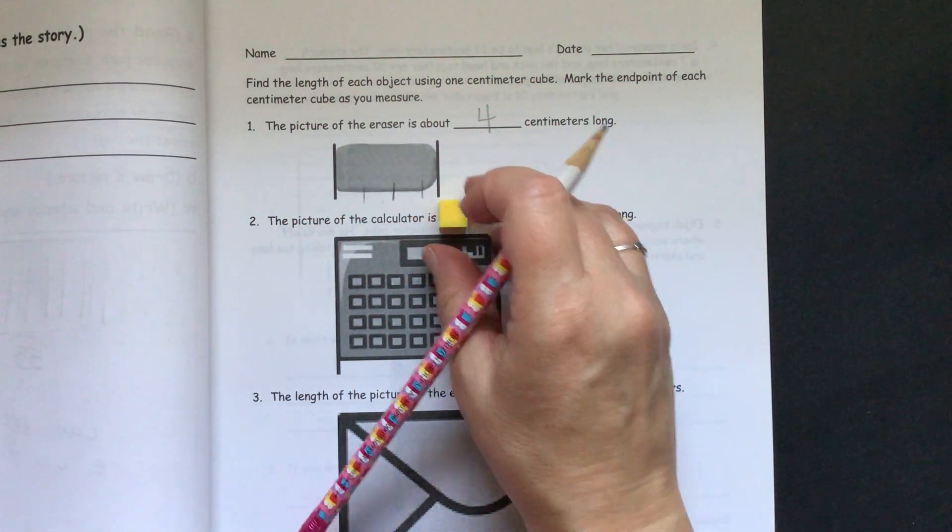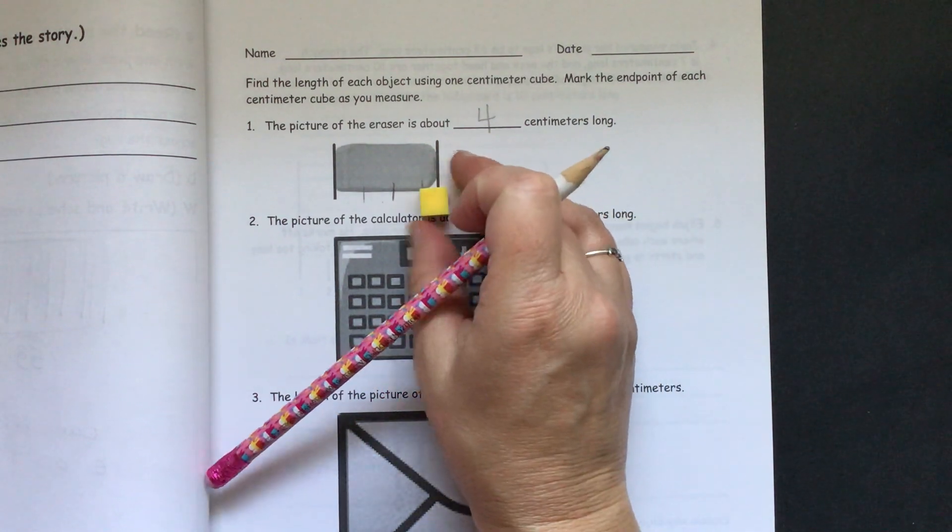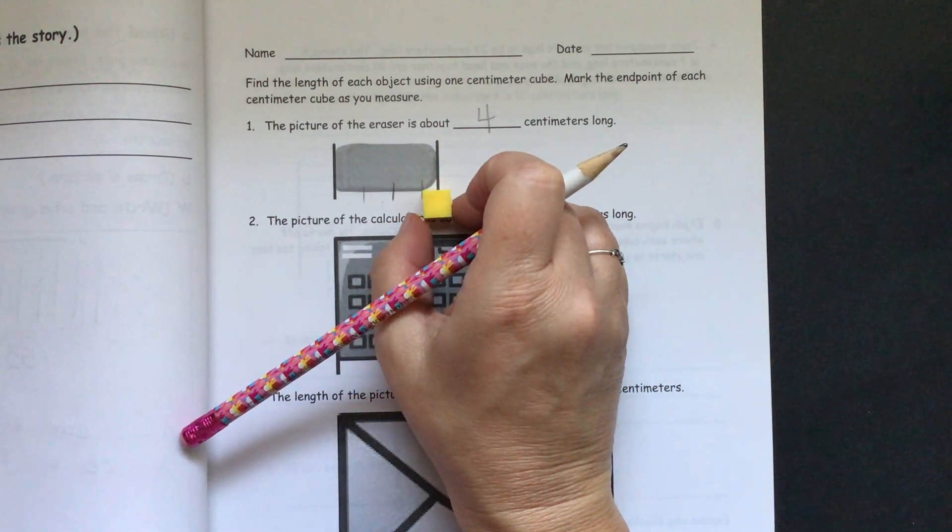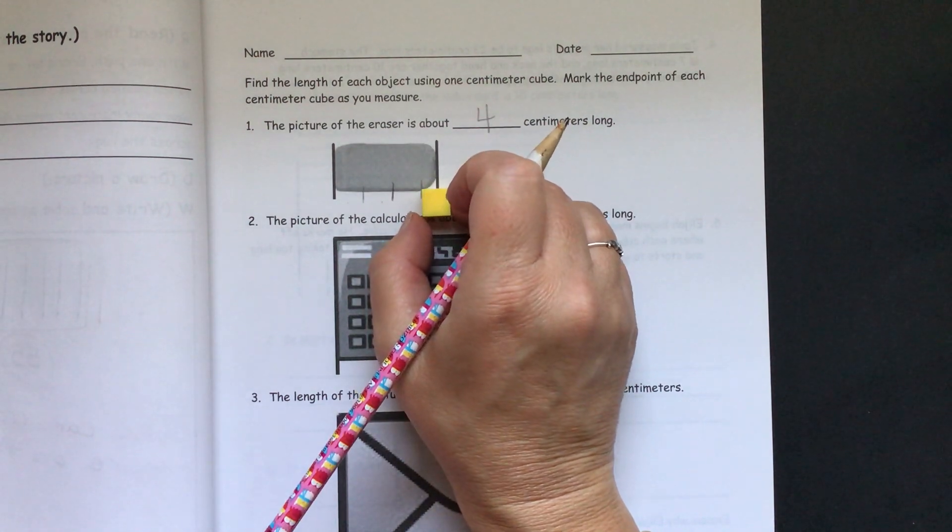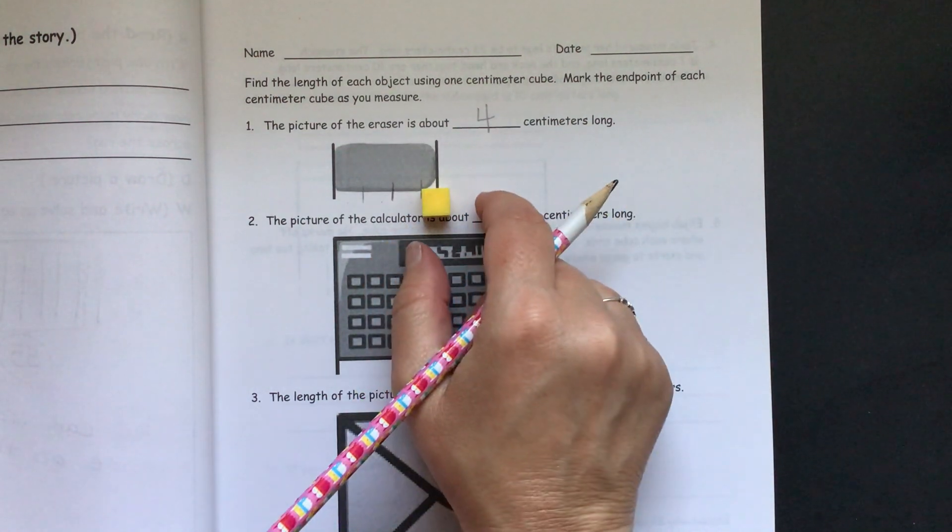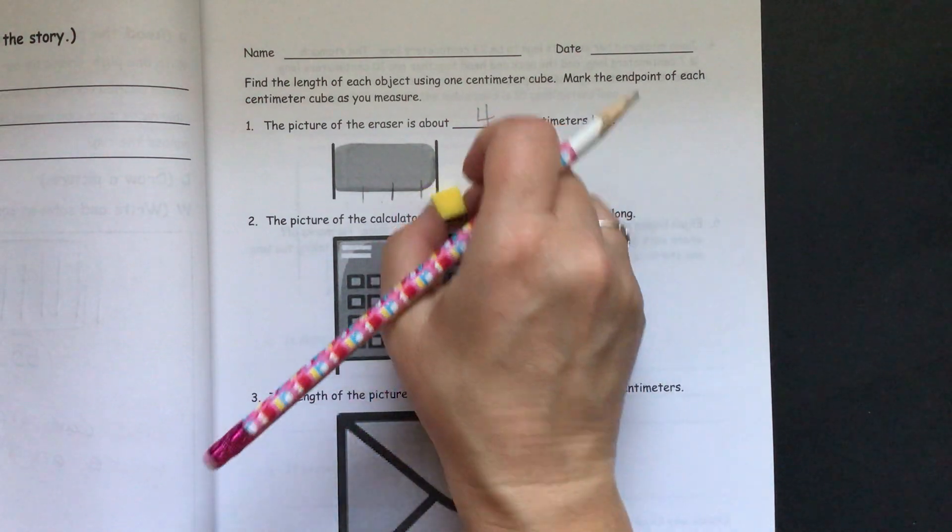By about half or more. So we'll estimate, which is not an exact amount. But it's pretty close. So it's pretty close to four centimeters long.